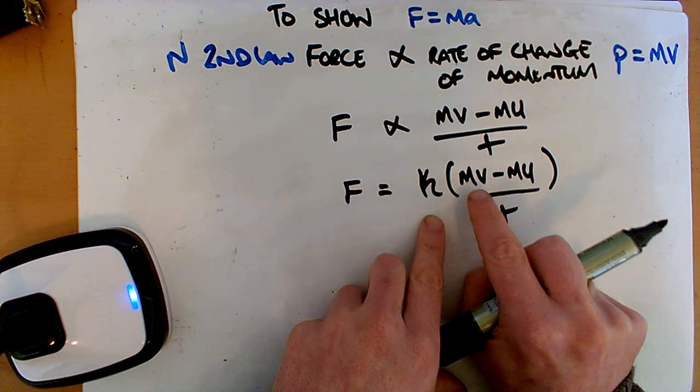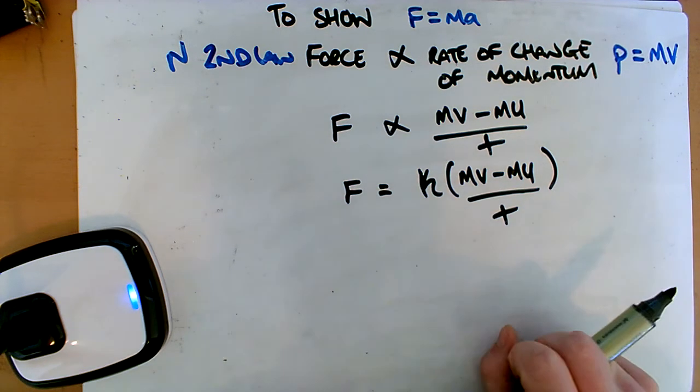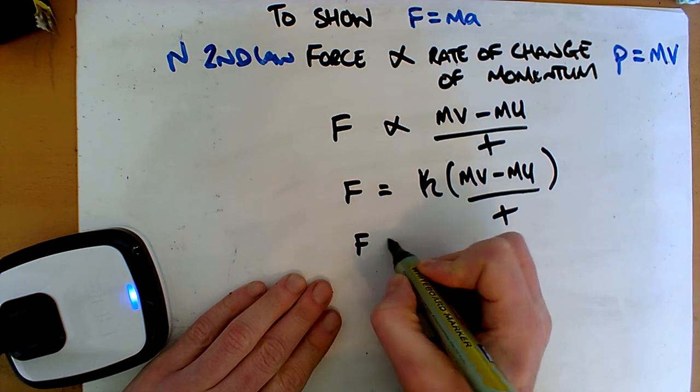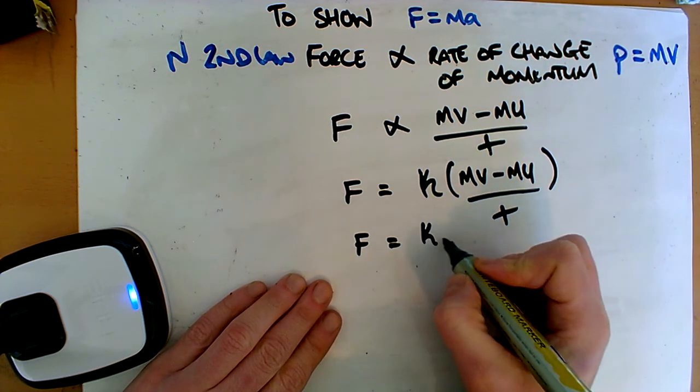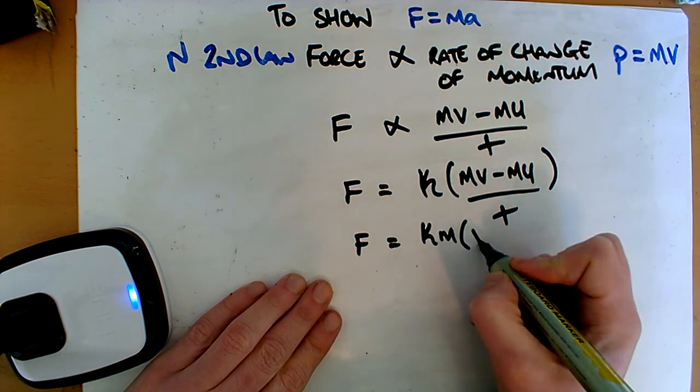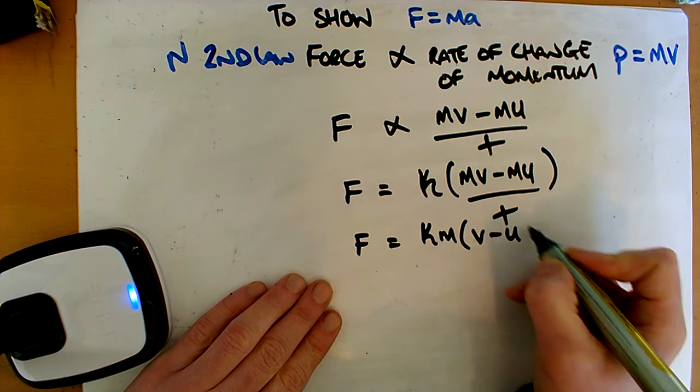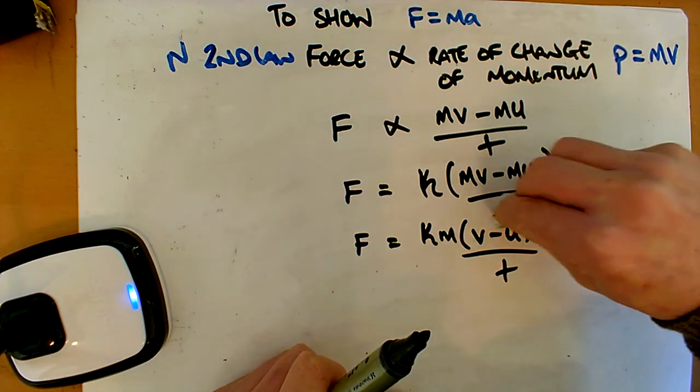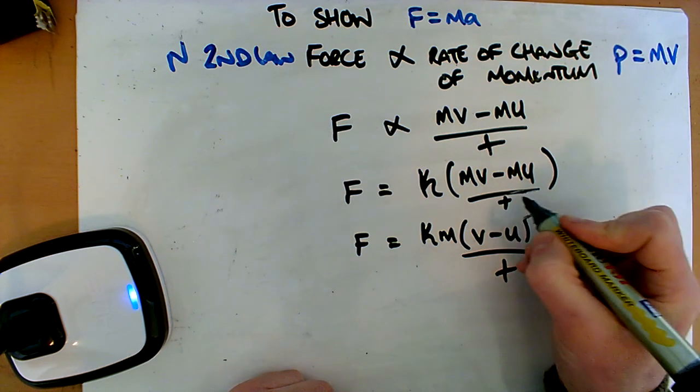Now if you look at this, we're going to have this M as common to both of them. We're going to pull that out because that's usually what we do. So we've got our K and M, and then we're left with V minus U all over T. This is getting a little bit cramped.